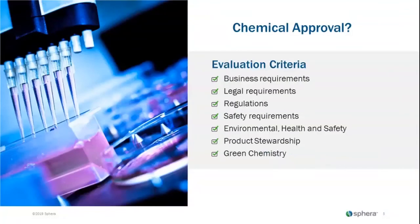Let's talk about the chemical approval and some of the evaluation criteria required when getting an approval on site. Every chemical has to be approved. Going through an approval process requires considering certain criteria. You have your business requirement — it all depends on what your business does, what area of industry it's in. Are you manufacturing? Are you in healthcare? Are you in construction? Your business requirements drive your approval process.